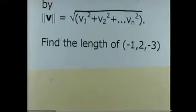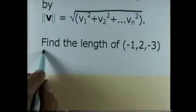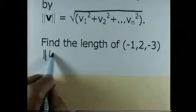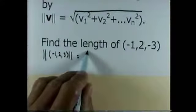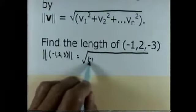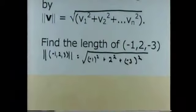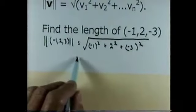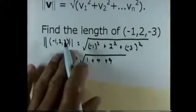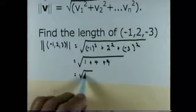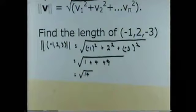Example: let's find the length of the vector negative 1, 2, negative 3. The magnitude of negative 1, 2, negative 3 is the square root of negative 1 squared plus 2 squared plus negative 3 squared, which is going to be the square root of 1 plus 4 plus 9, which is the square root of 14.